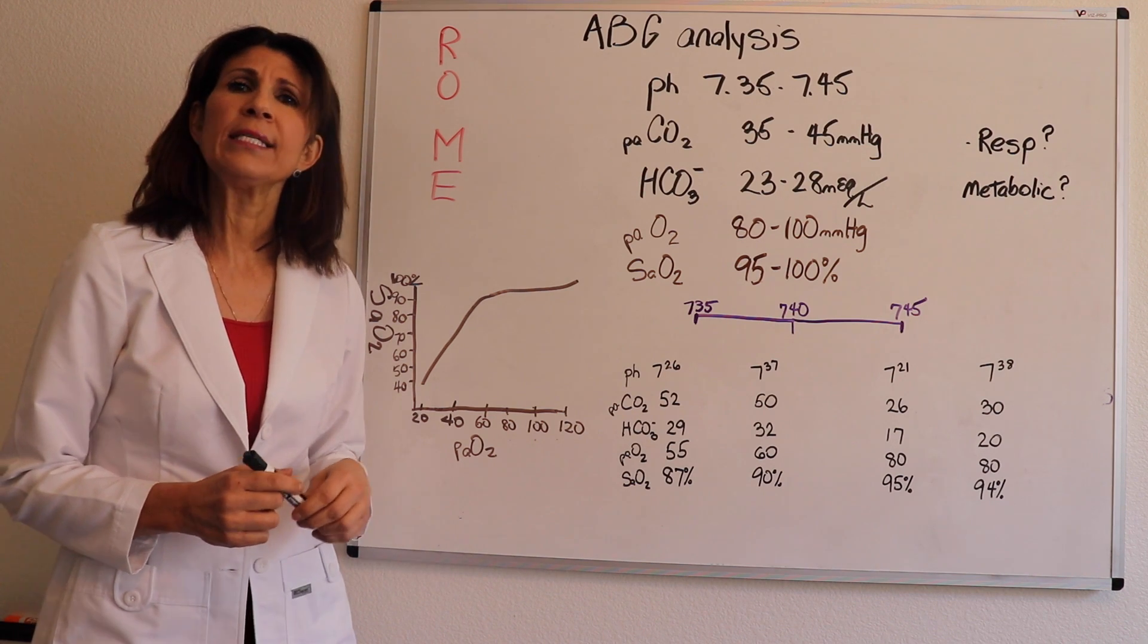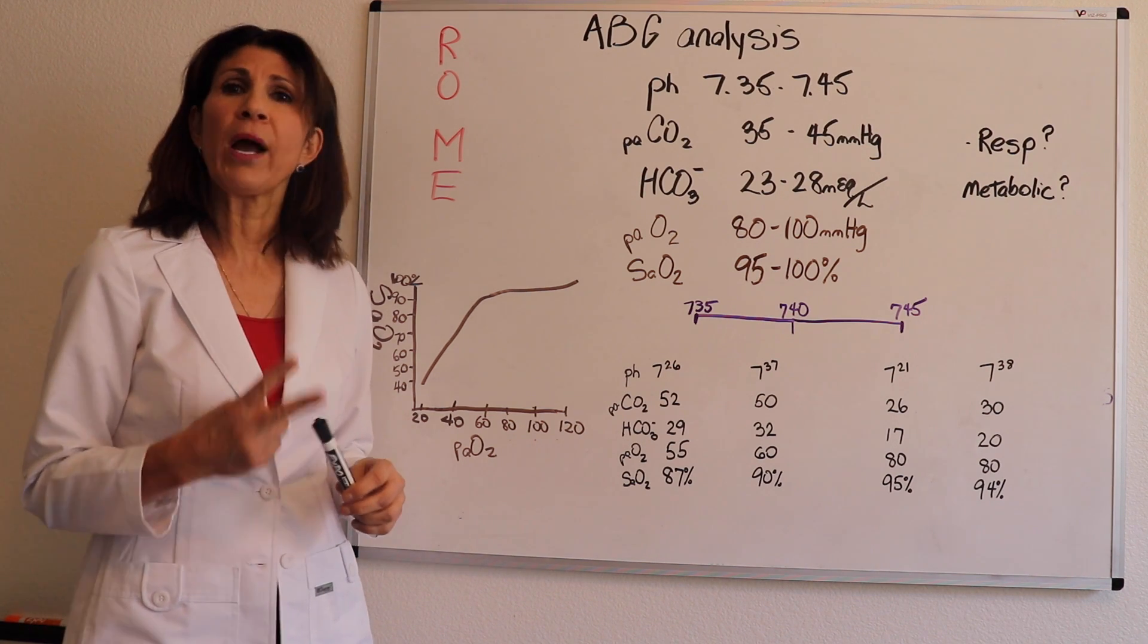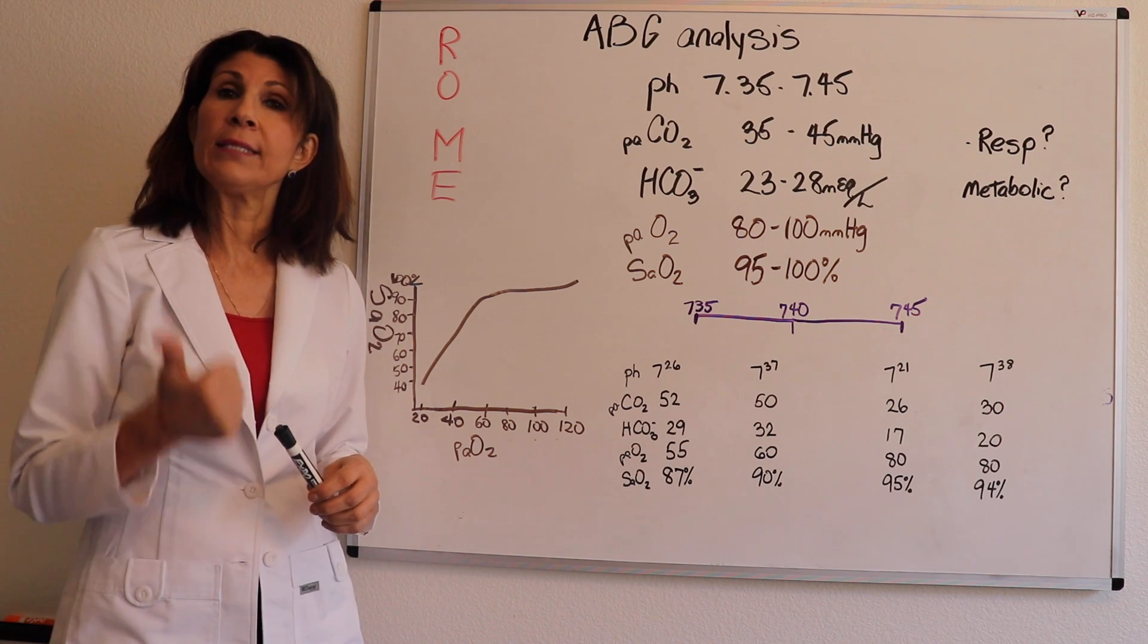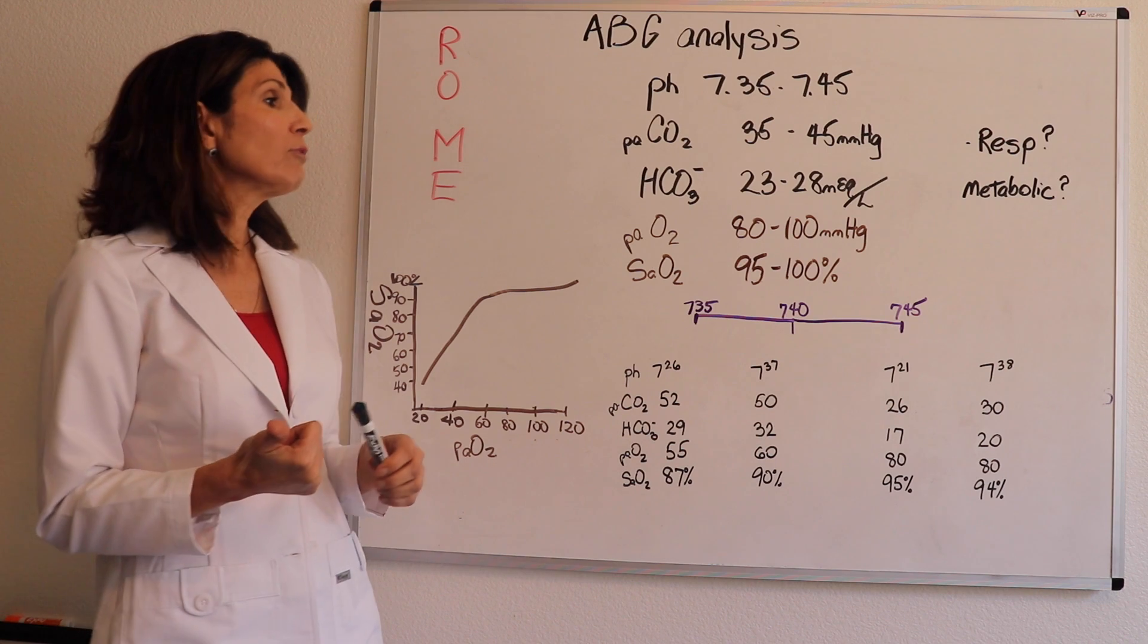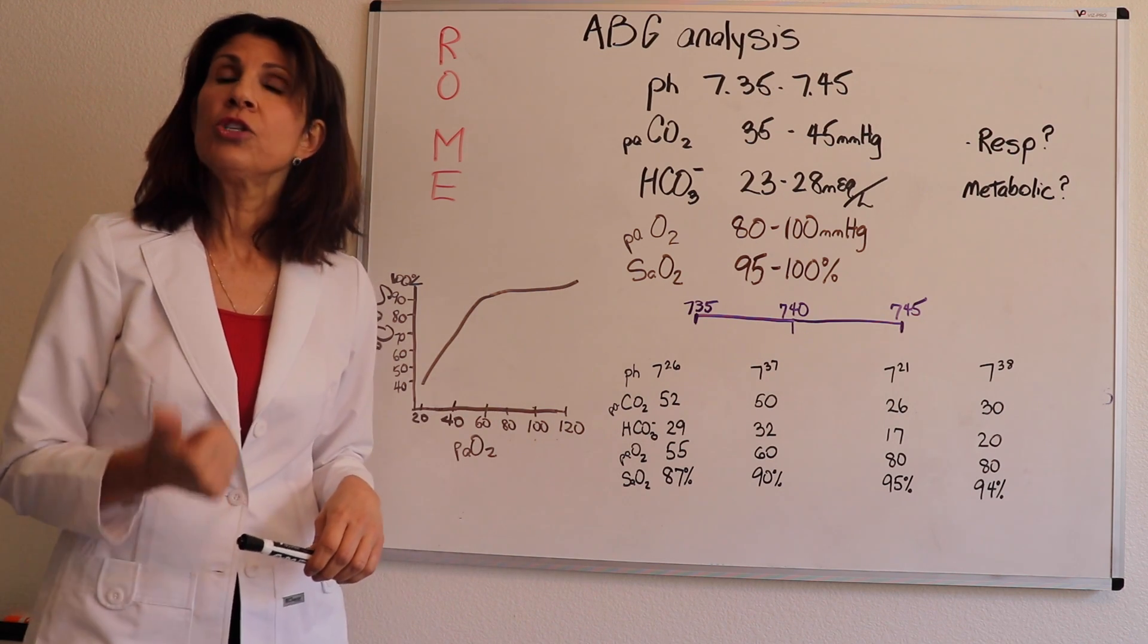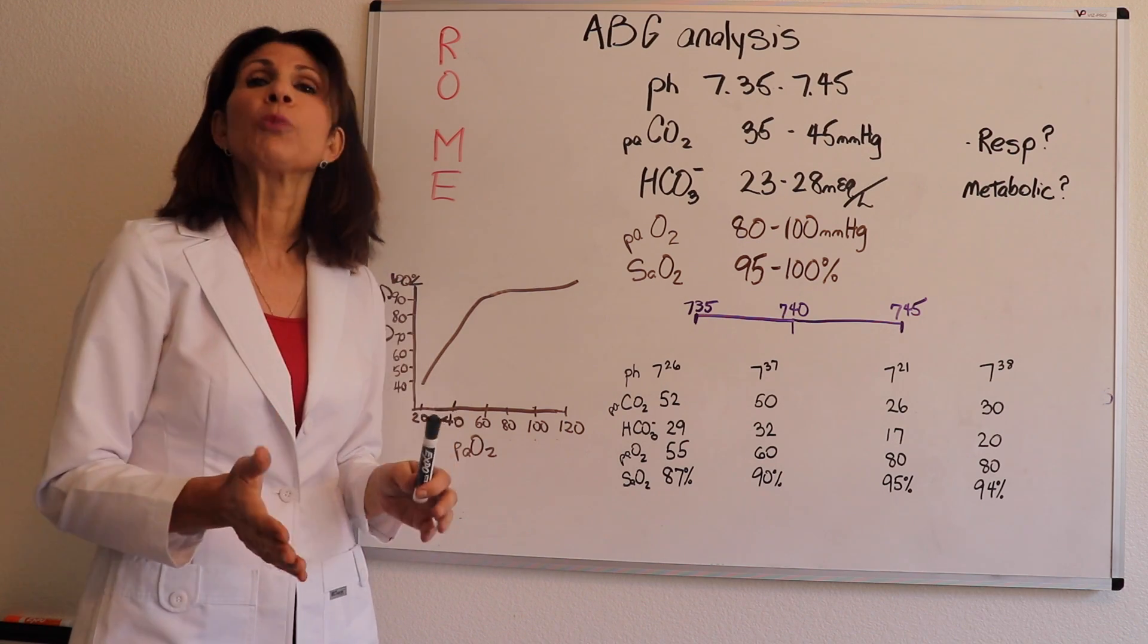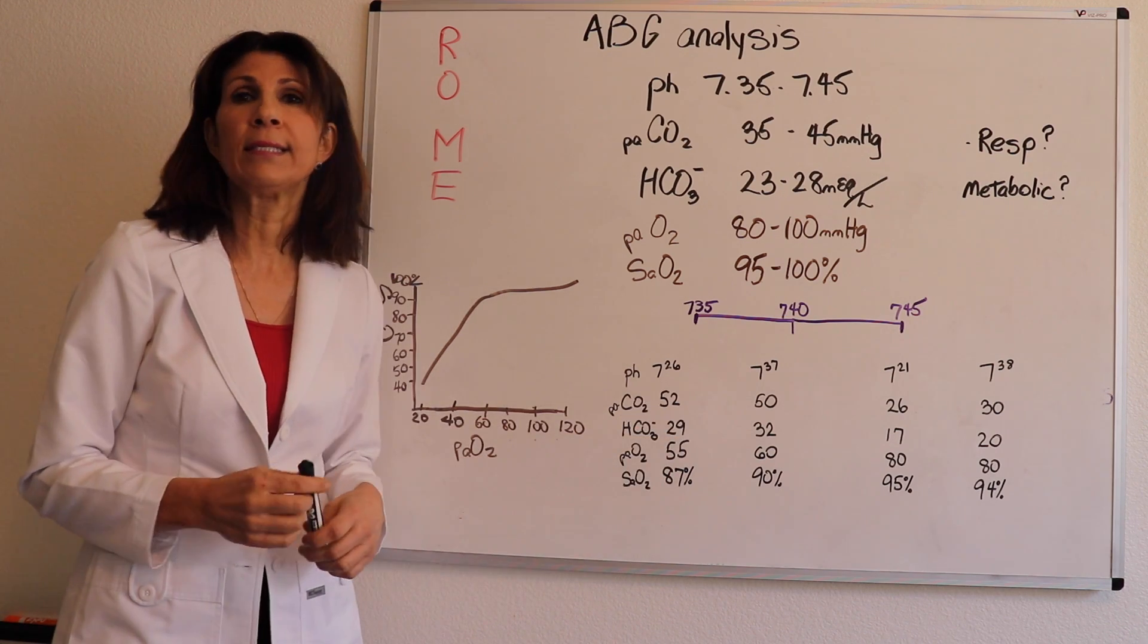So an ABG analysis, there's two reasons why you're drawing an arterial blood gas and evaluating it. One reason is acid-base balance and the second reason is oxygenation. So just there right off the bat, it tells you the approach we're going to take in analyzing these examples.